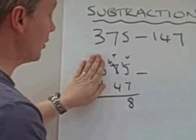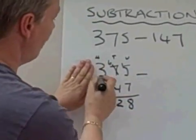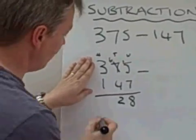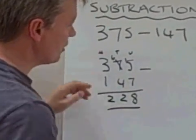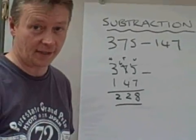4 from 6, which is 2. And 3 take away 1 in the hundreds column, which is also 2. So the answer to this question is 228.